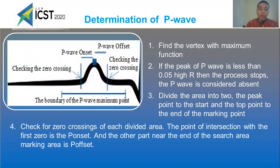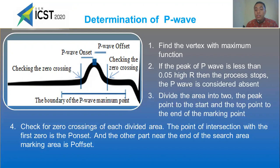Determination of P-wave location: First, find the maximum function. If the peak of the P-wave is higher than 0.05, the process proceeds to find the area from the peak point to the start and from the top point to the end of the marking. Then check for zero crossing of each divided area. The point of intersection with the first zero is the P-onset, and the other part near the end of this area is the P-offset.